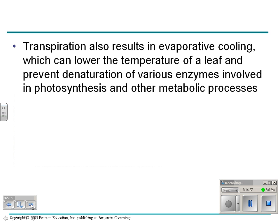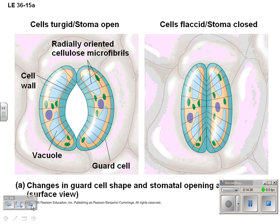A plant can also be cooled by losing water, just like you can when you sweat, which helps cool a leaf so enzymes don't denature. When a cell is turgid, the stoma is open; when the cell is flaccid, the stoma closes — and it all has to do with the cellulose fibers inside of the cell.